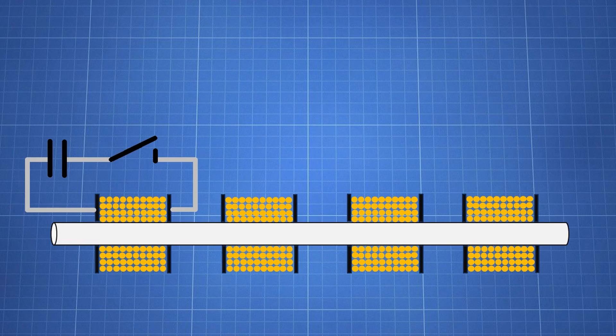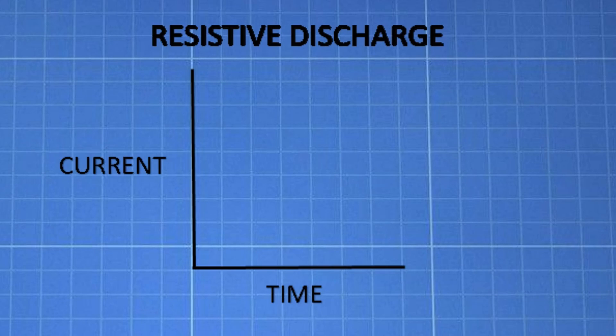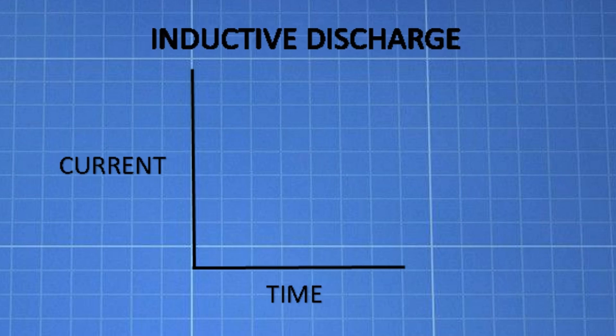For each subsequent stage though, we need to know how the current flows through an inductor, which in our case is a coil. Unlike when a capacitor is discharged through a resistive circuit where the current starts at its peak and decreases over time, when a capacitor is discharged through an inductive circuit it takes time for the current to increase to its peak before eventually falling to zero.